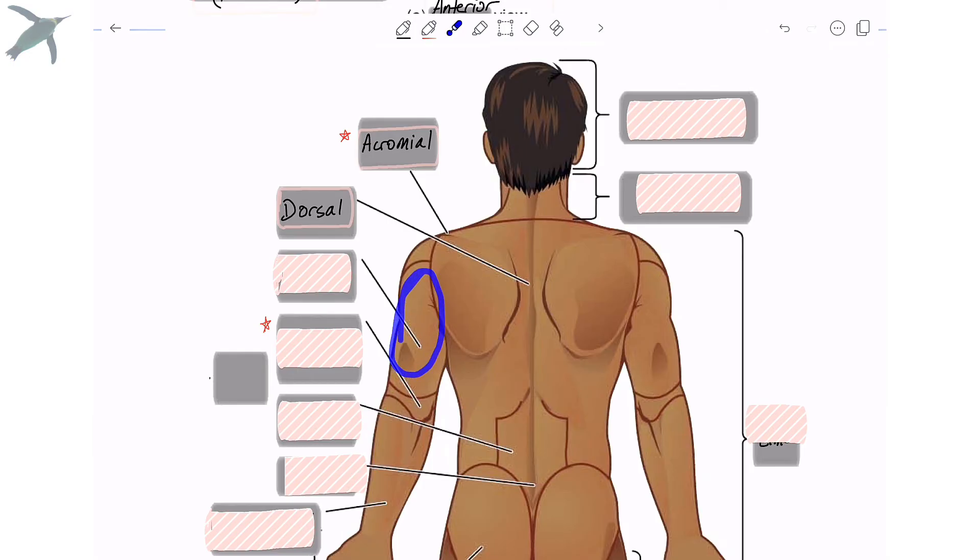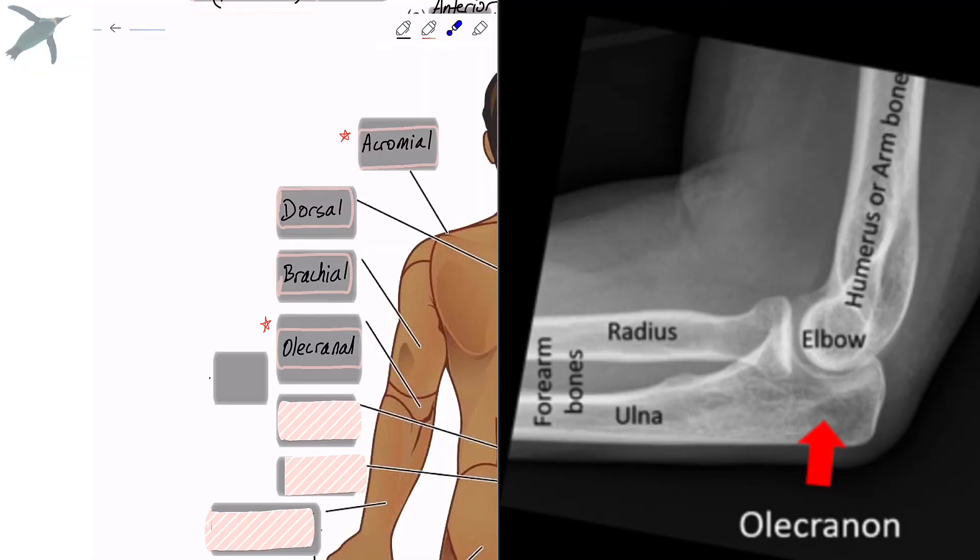The posterior side of the arm gets the same term as the anterior. That's the brachial region. And the elbow messes people up. That is the olecranal region. That comes from two Greek components. Oline refers to the elbow and cranon refers to the head or skull. So literally, it means the elbow head.